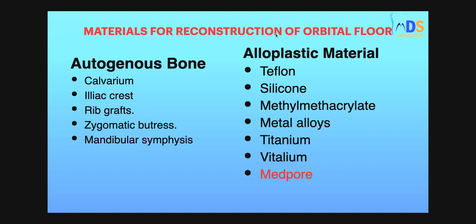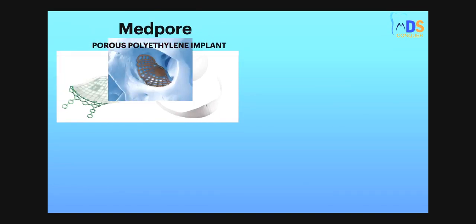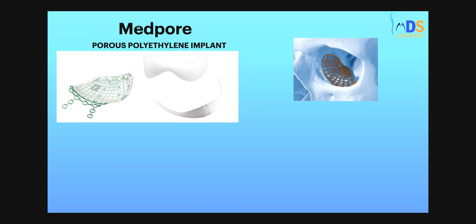Alloplastic materials used for reconstruction of the floor of the orbit include Teflon, silicone, methyl methacrylate, metal alloys, titanium, vitalium, and Medpor. Among autogenous and alloplastic materials, autogenous bone grafting is the first line of choice. This picture shows a Medpor porous polyethylene implant, which helps in reconstruction of the floor of the orbit.